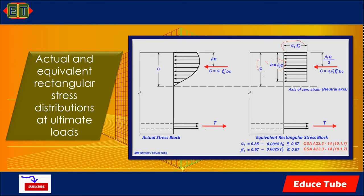The symbols α₁ and β₁ describe the rectangular stress block factors. Their values are obtained using two specific formulas with the limitation that they should not be less than 0.67. For a rectangular compressive zone of constant width B and depth to the neutral axis c, the resultant compressive force is C equals α₁·β₁·f'c·B·c.